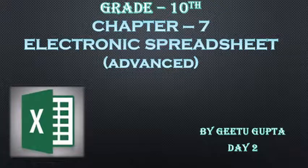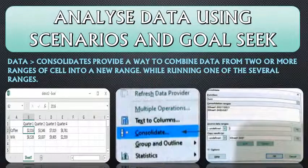Very good morning dear students. Welcome back to your computer class. Today we will continue our chapter number 7, Electronic Spreadsheet. Open your books at page number 119. Let's start session 1: Analyze data using scenarios and goal seek.